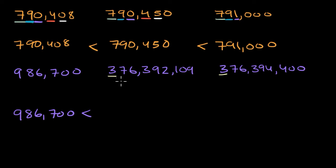So we can go to the next place value. We could go to the 10,000,000s. They're the same. We could go to the millions. They're still the same. We can go to the 100,000s. They're still the same.